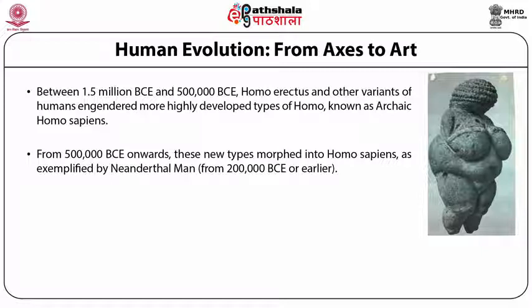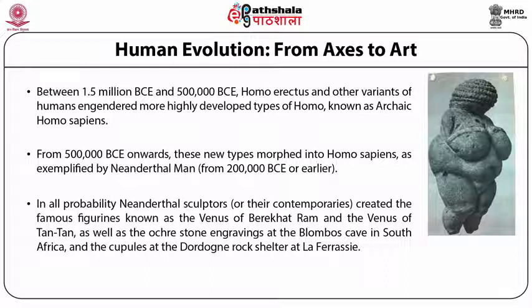From 500,000 BCE onward, new human types morphed into Homo sapiens, exemplified by Neanderthal man. Neanderthals had a brain size of about 1500 cc, which is actually greater than today's modern humans, so clearly cranial capacity is not the only guide to intellect — internal brain architecture is important too. In all probability, Neanderthal sculptors created the famous figurines known as the Venus of Berekhat Ram and the Venus of Tan-Tan, as well as the ochre stone engraving at Blombos Cave in South Africa and the cups at Dordogne rock shelter at La Ferrassie.